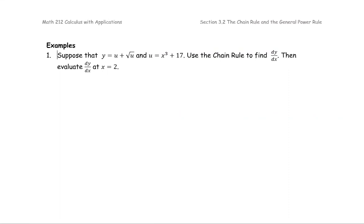For this example, suppose that y equals u plus square root of u, and u equals x to the third plus 17. We're going to use the chain rule to find the derivative of y with respect to x, then evaluate dy/dx at x equals 2.